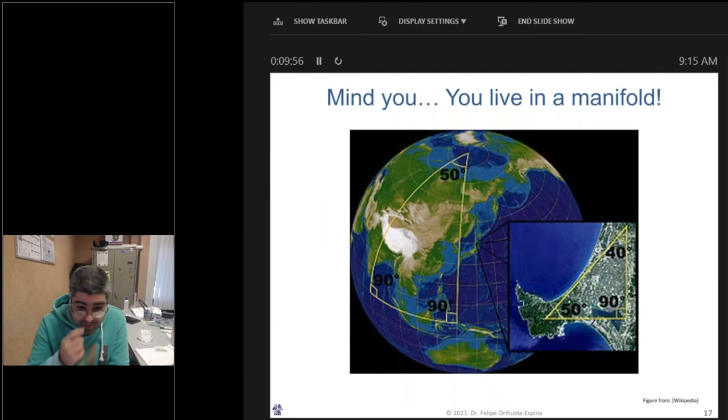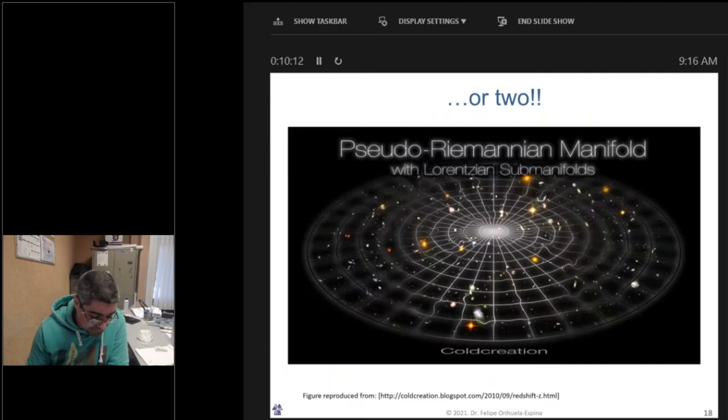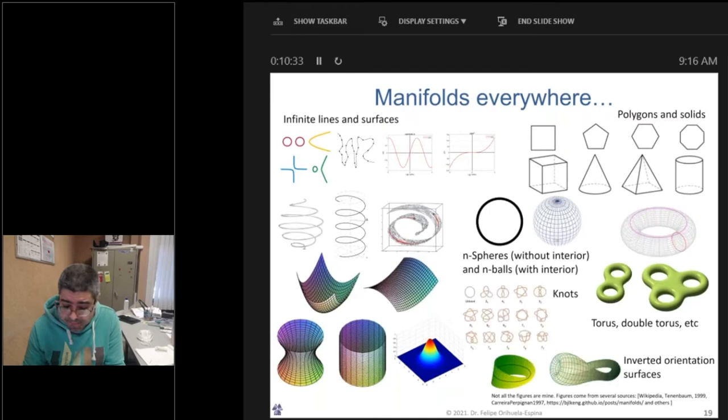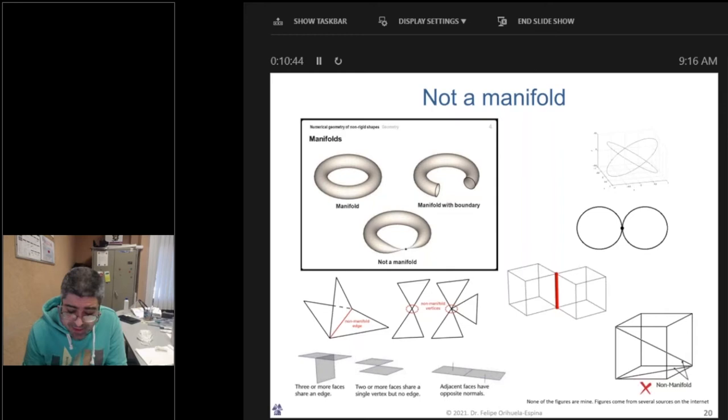Manifolds may be a mathematical abstraction, but many physical objects abide by this definition. For instance, Earth is a manifold. At a small scale, for instance within your city, Euclidean geometry holds despite the global curvature. The physical universe is also a manifold. This is not to be confused with the mathematical universal set, also called the universe, which may or may not be a manifold. In fact, there are manifolds everywhere, in lines and surfaces, in polygons and solids, in spheres and angles, in toruses, in knots, in inverted orientations of surfaces, you name it. Most physical objects around you right now are manifolds. Manifolds are so pervasive that it is at times more difficult to see what is not a manifold.